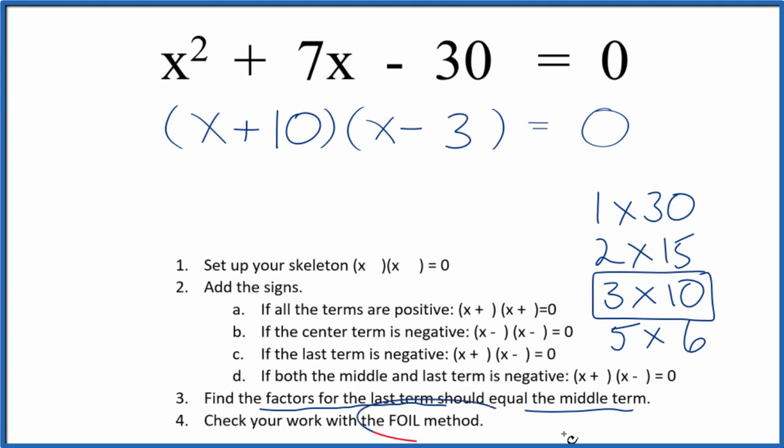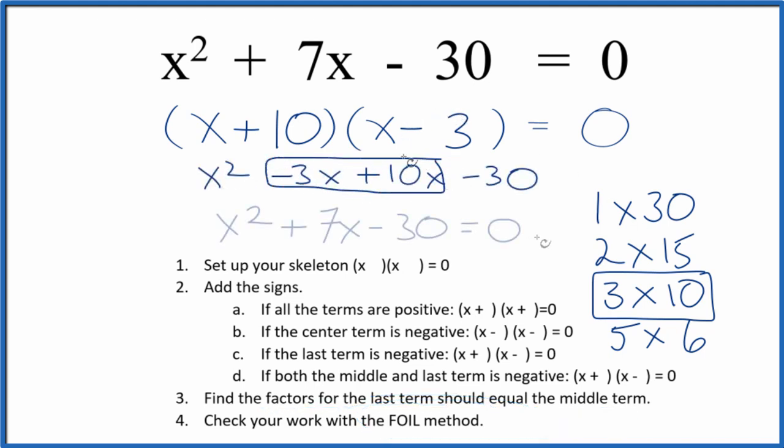We should check our work with the FOIL method. We multiply the first, outside, inside, and last terms. We can combine these terms, and this is what we started with. So we correctly factored the equation x² + 7x - 30.